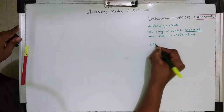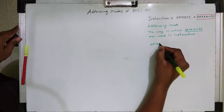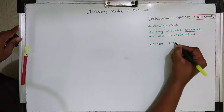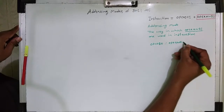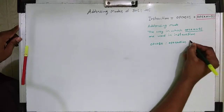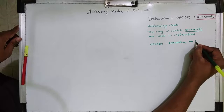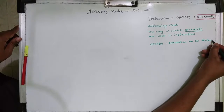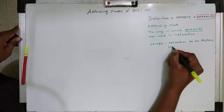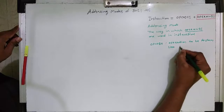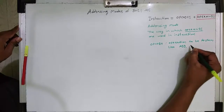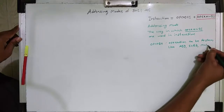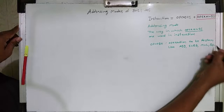Now, what is meant by operational code or opcodes? Operations to be performed are called operational code or opcodes. Examples of opcodes are add, subtract, multiply, and divide.